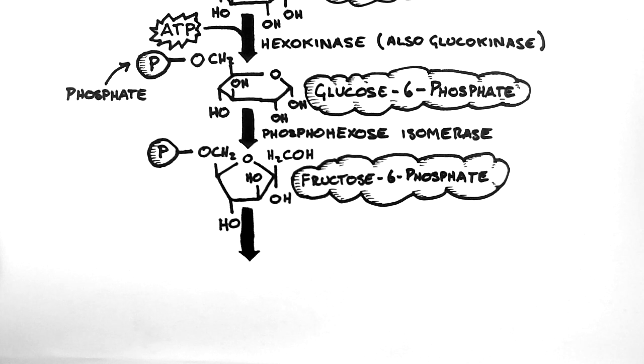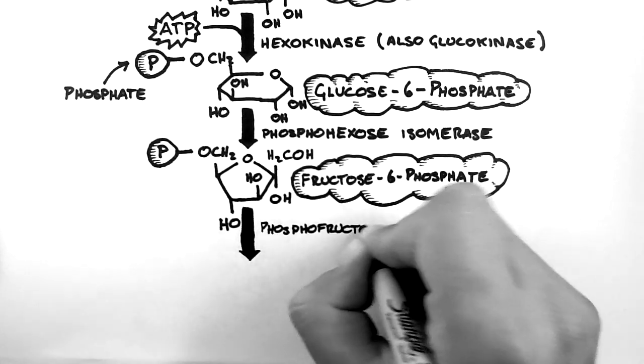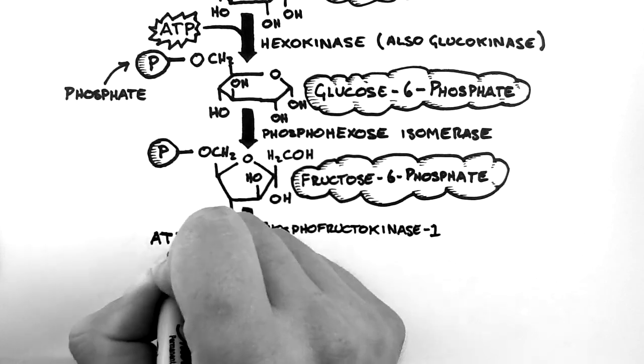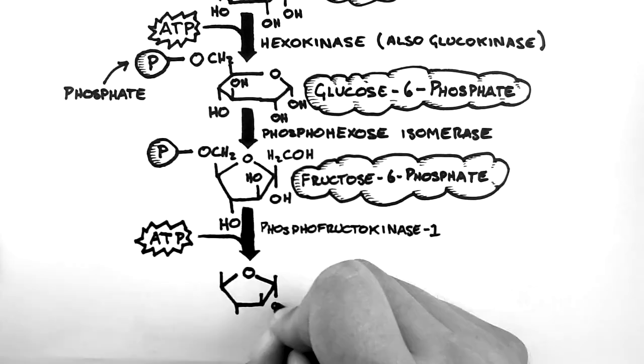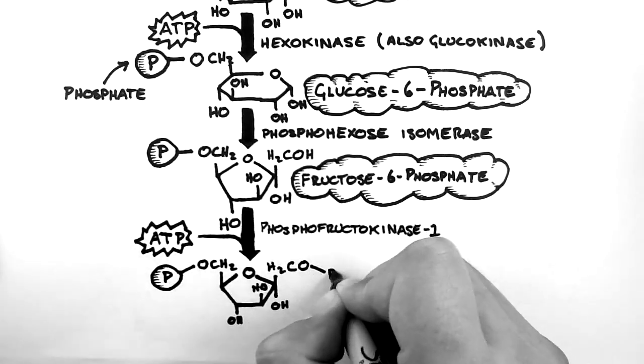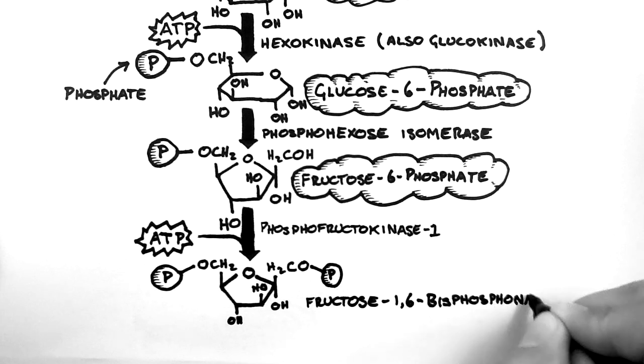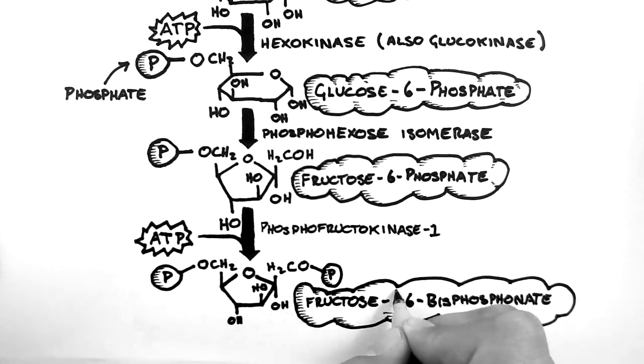Now we meet another kinase, phosphofructokinase 1. This enzyme attaches another phosphate group to our molecule creating fructose 1,6-bisphosphate. Sorry, my mistake, that should read fructose 1,6-bisphosphate, not bisphosphonate.